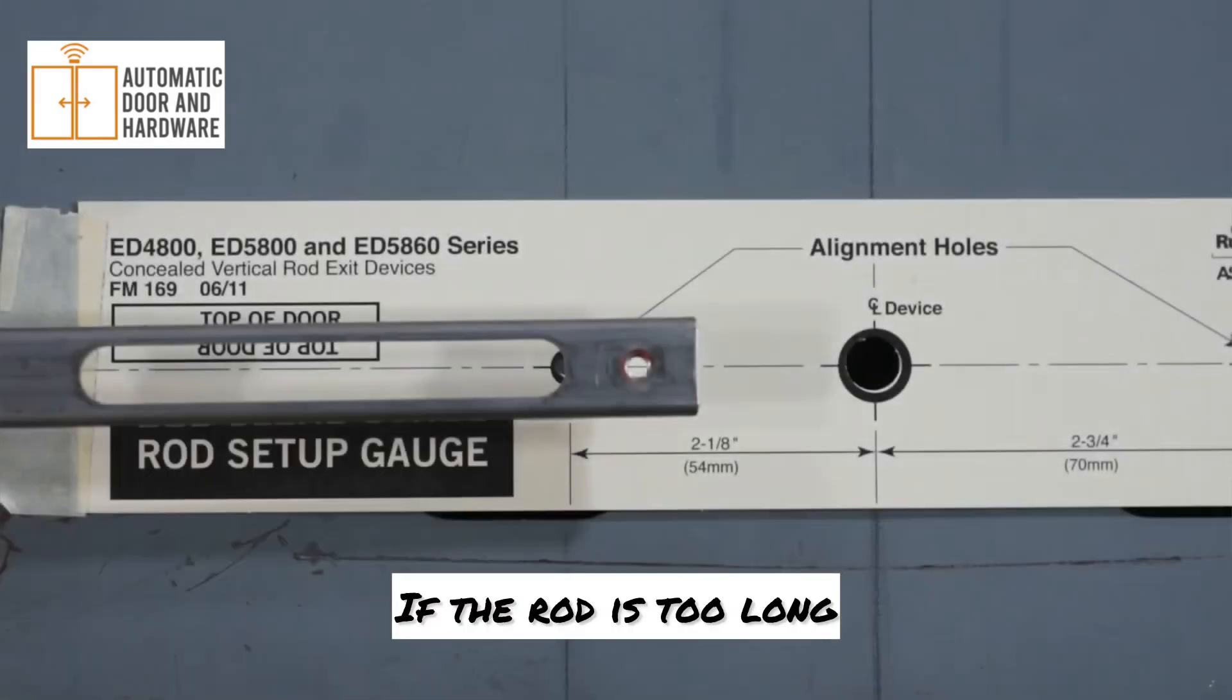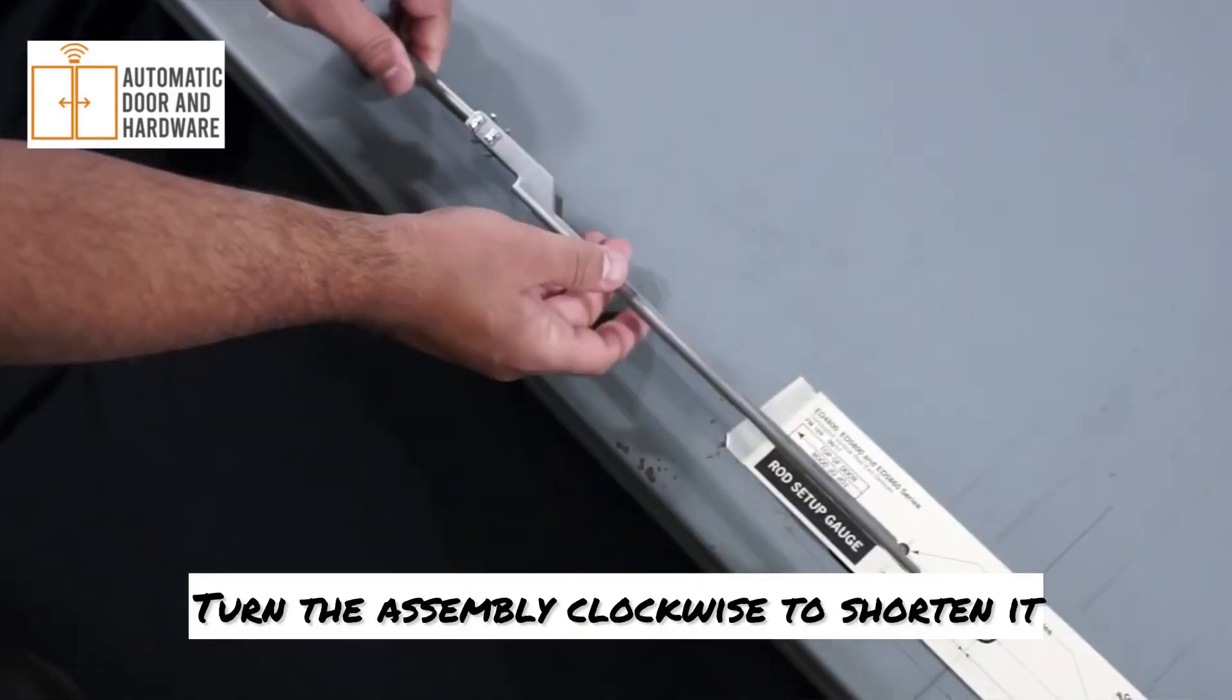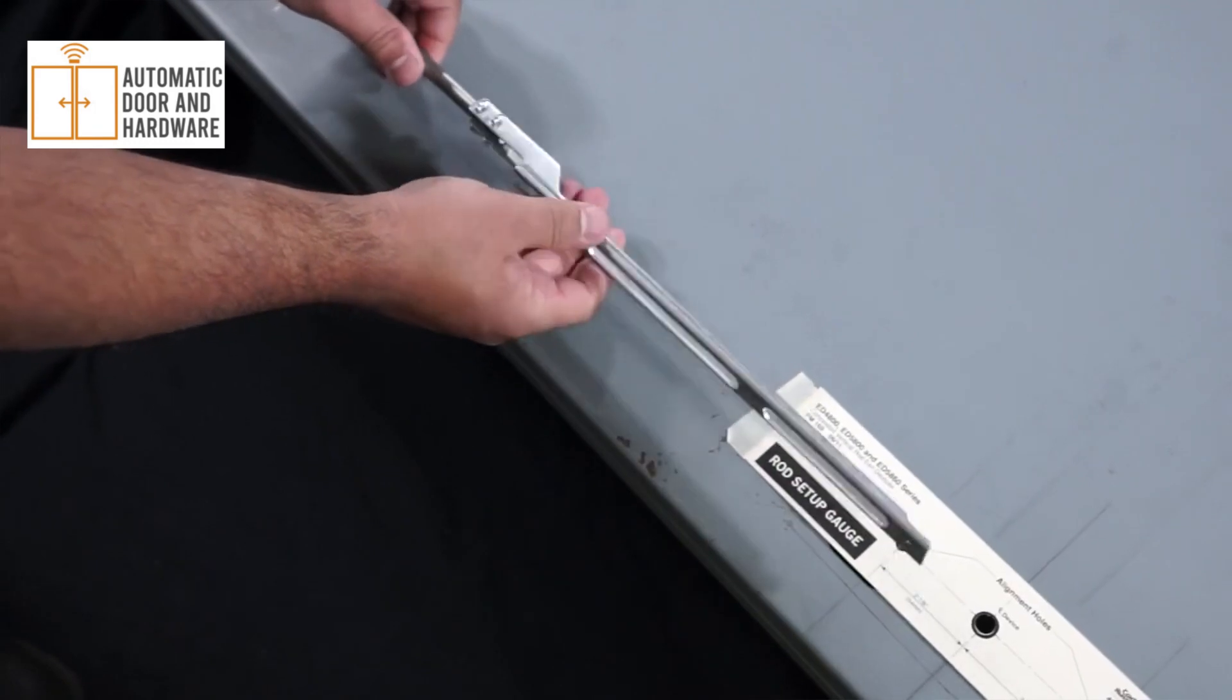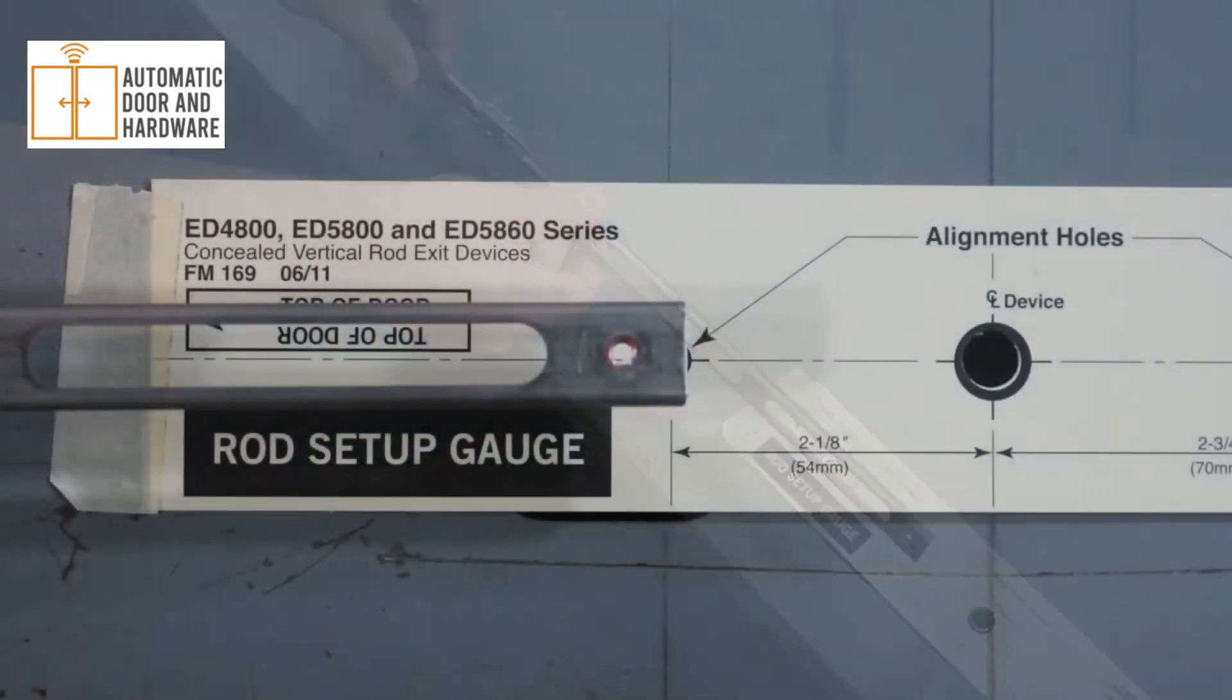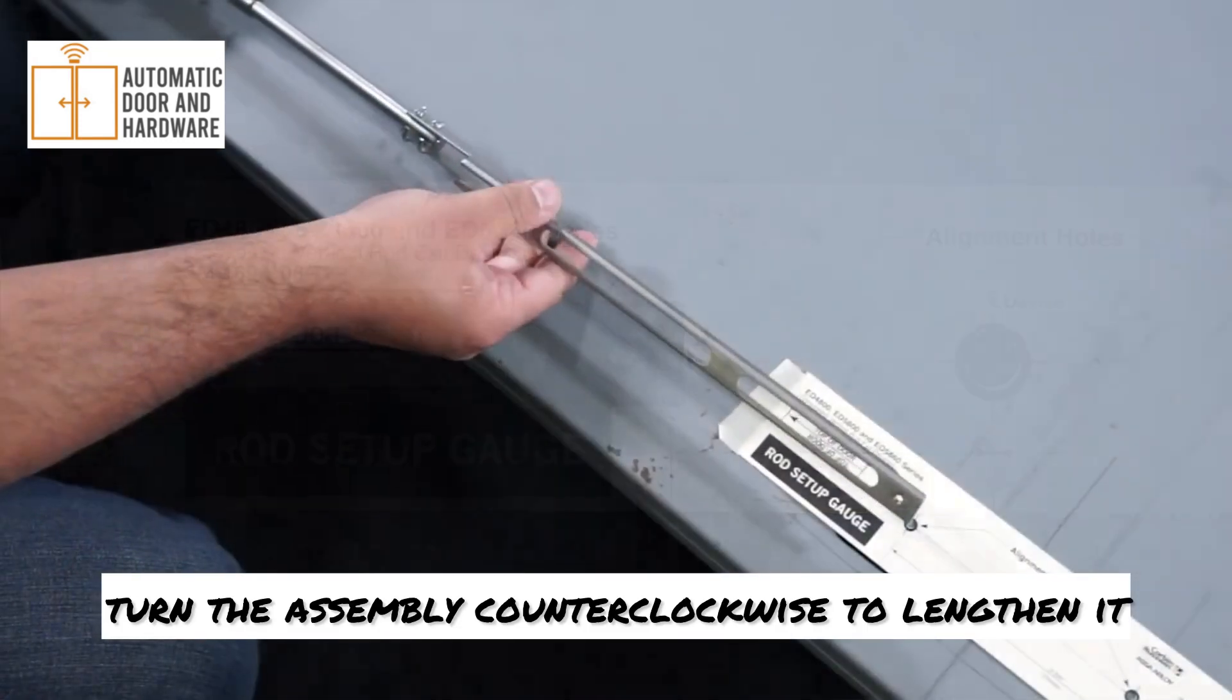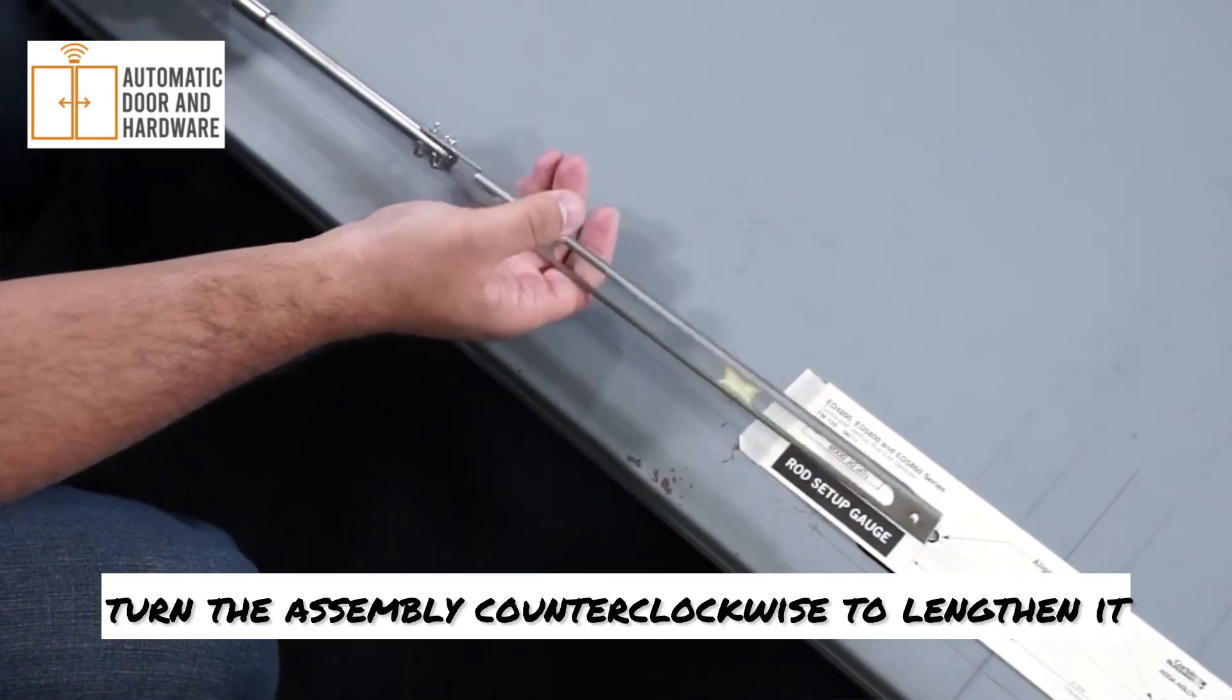If the rod is too long, turn the assembly clockwise to shorten it. If the rod is too short, turn the assembly counterclockwise to lengthen it.